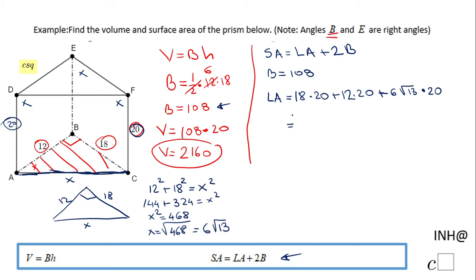So, let's simplify here. 18 times 20, that is 360. 12 times 20 is 240. 6√13 times 20, that is 120√13. So, the last thing I'm going to do here, 360 plus 240, that will be 600 plus 120√13. And this is the lateral area.